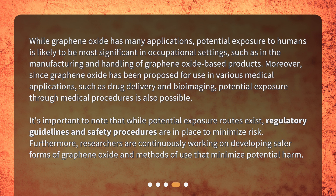Moreover, since graphene oxide has been proposed for use in various medical applications, such as drug delivery and bioimaging, potential exposure through medical procedures is also possible. It's important to note that while potential exposure routes exist, regulatory guidelines and safety procedures are in place to minimize risk. Furthermore, researchers are continuously working on developing safer forms of graphene oxide and methods of use that minimize potential harm.